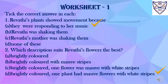Tick the correct answer in each. First, Revati's plants showed movement because: A. They were responding to her music. B. Revati was shaking them. C. Revati's mother was shaking them. D. None of these. And the answer is A — they were responding to her music.